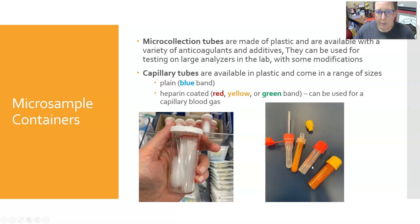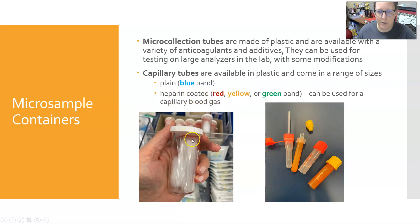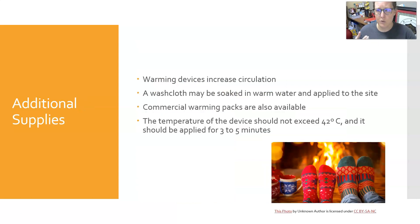All micro collection tubes have a way to get blood into the sample — whether a little scoop or a capillary tube — plus a lid, and may contain additives. Capillary tubes are also available in plastic in a range of sizes. Plain ones have a blue band across the top; heparin-coated ones have a red, yellow, or green band. These can be used for capillary blood gases and other capillary collections, including newborn screening to fill in the circles.